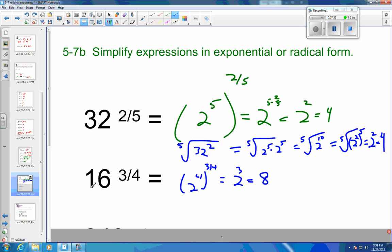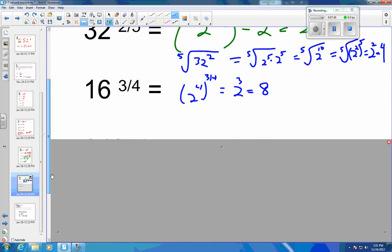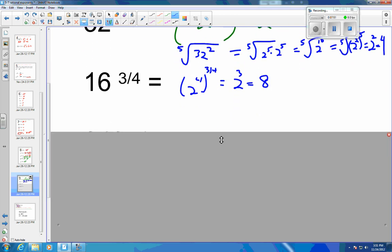Again, memorizing your 2 to the 1st is 2, 2 squared is 4, 2 to the 3rd is 8, 2 to the 4th is 16, 2 to the 5th is 32, 2 to the 6th is 64. Just keep going up and memorizing them because you need them. And the faster you can get them out of your memory, the easier these problems get.